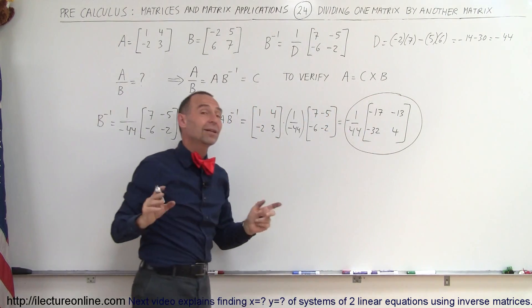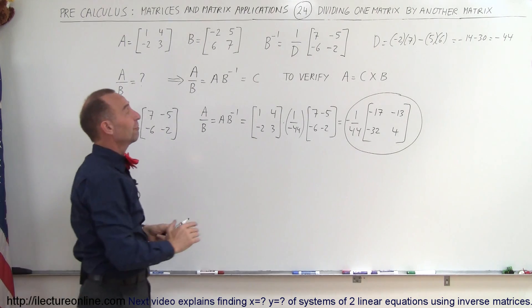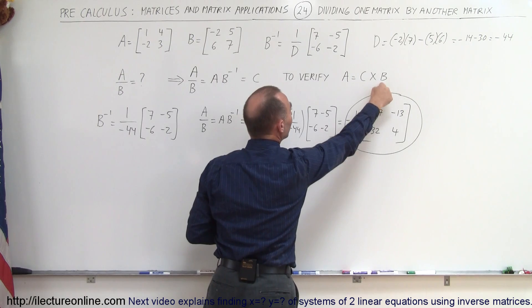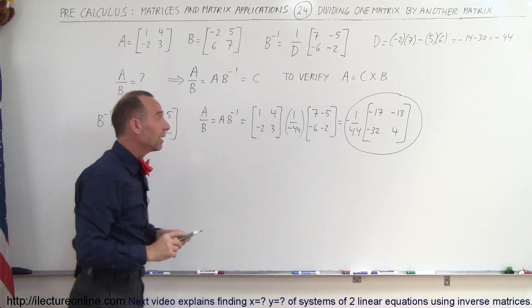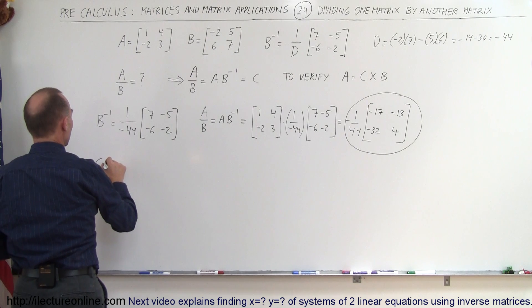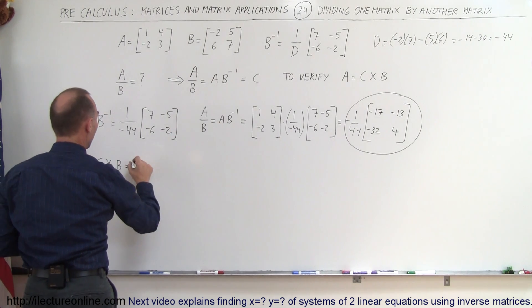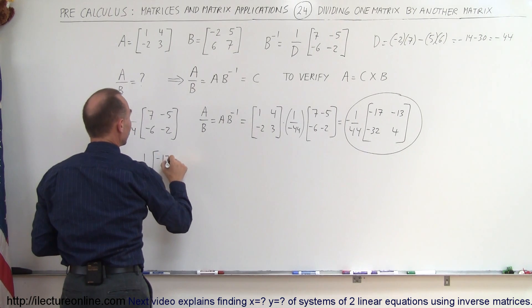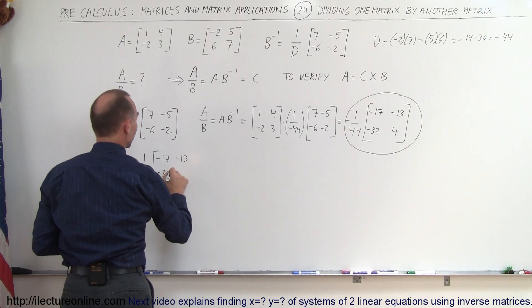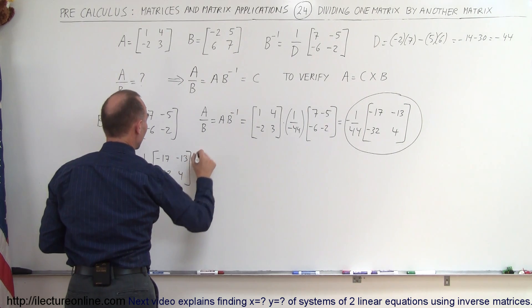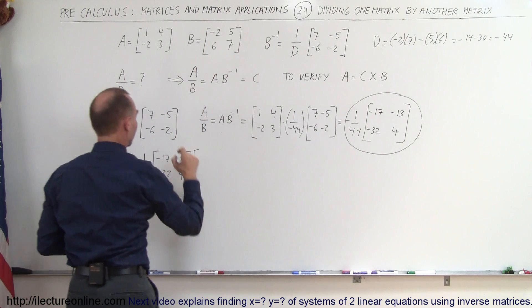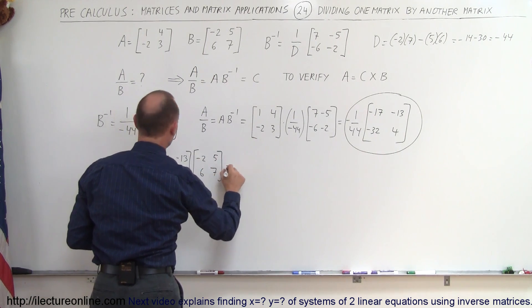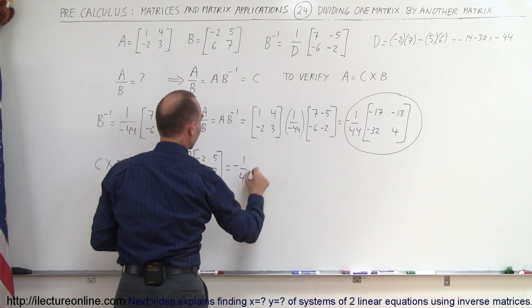Now you may wonder how we know that's correct. We'll verify by taking the solution matrix C, multiplying by B, to see if we get A back. So C times B equals minus 1 over 44 times the matrix negative 17, negative 13, negative 32, positive 4, multiplied by matrix B, which is negative 2, 6, 5, and 7.